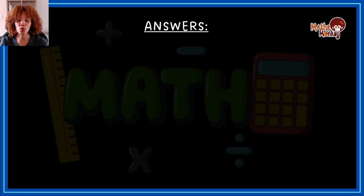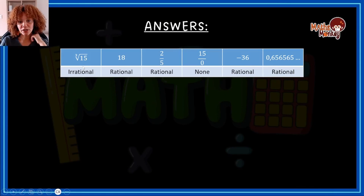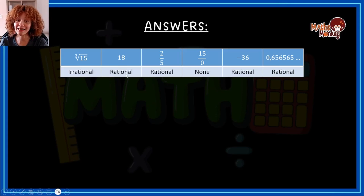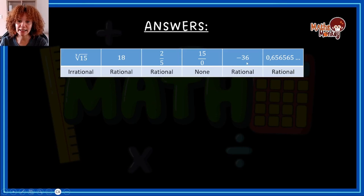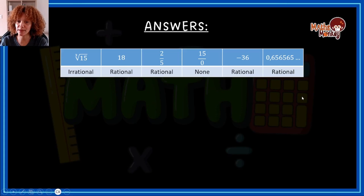Let's look at the answers. We need to classify each as rational or irrational. The cube root of 15 is irrational. 18 is rational because it can be written as 18 over 1. 2 over 5 is written as a fraction, so it's rational. 15 over 0 is undefined — not rational or irrational. Negative 36 is rational (negative 36 over 1). And 0.656565... is a recurring decimal, which is rational.